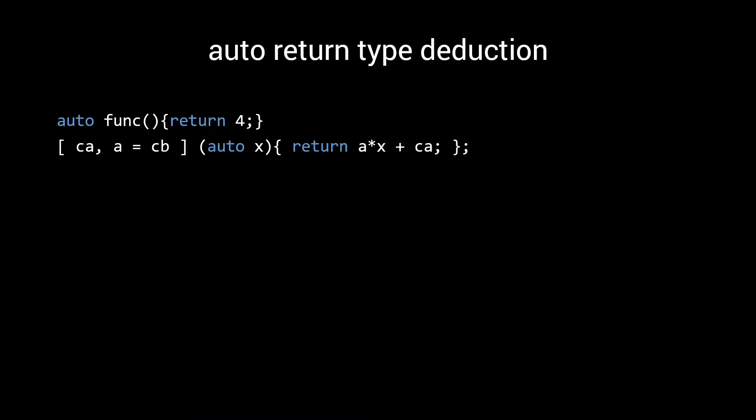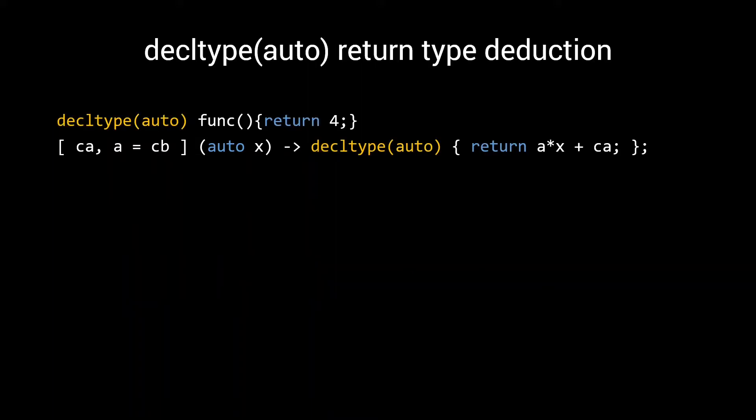Strangely enough, these rules are the rules for template type deduction. In particular, this means that a braced initialization list will not be deduced as an initializer list. Instead, you will get a compilation error. Another form of return type deduction is decltype auto return type deduction. As the name suggests, the decltype rules are used for deducing the decltype auto return type. Since we haven't discussed decltype deduction yet, let's do that now.